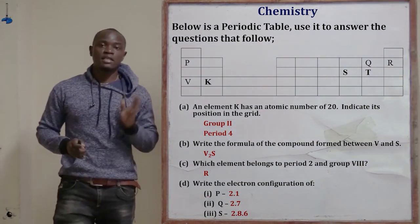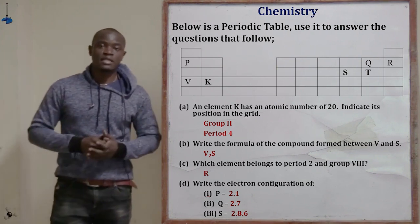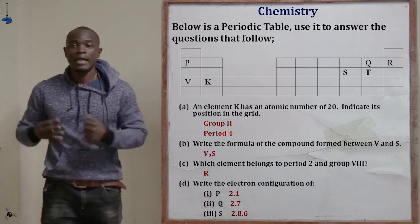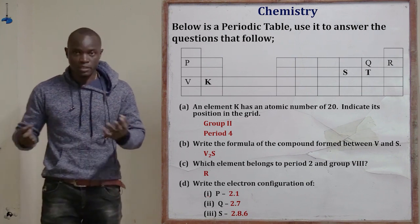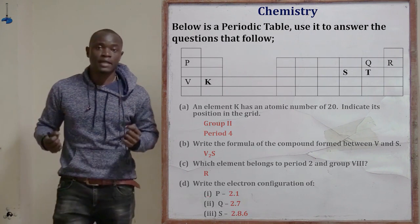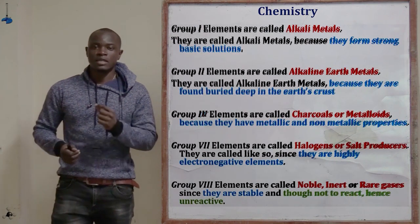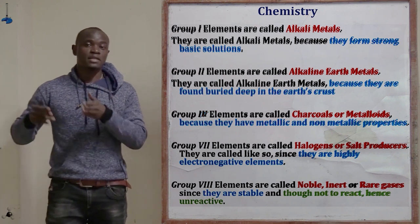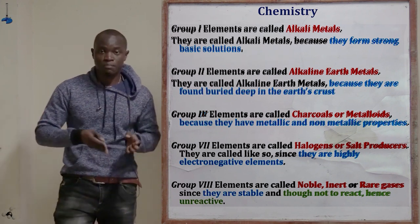Looking at the periodic table, in group number one we have elements P and V. Group one elements are called alkali metals — not alkaline metals. They are called alkali metals because they form very strong basic solutions, and it is because of that property that they are called alkali metals.